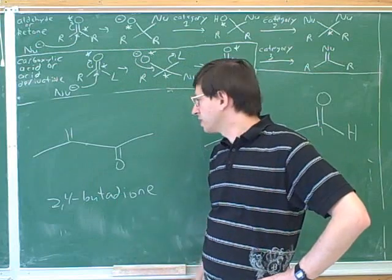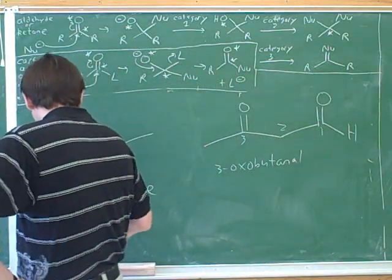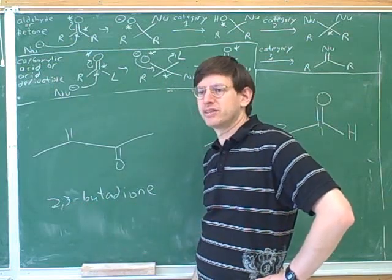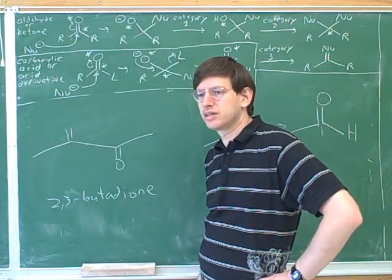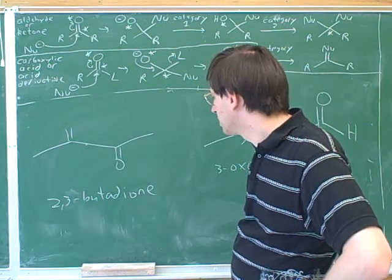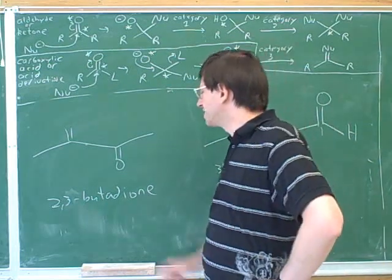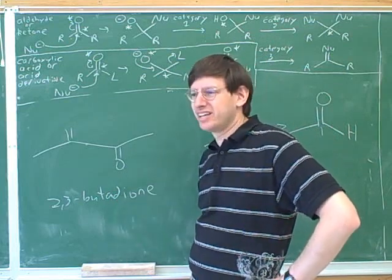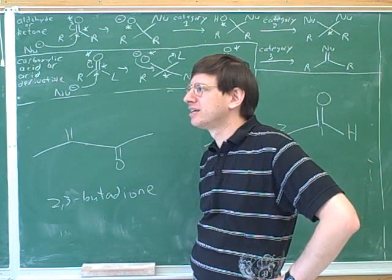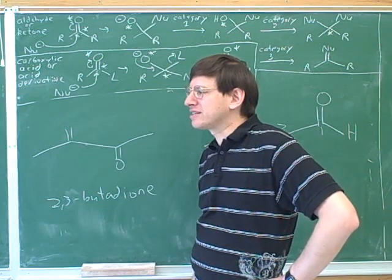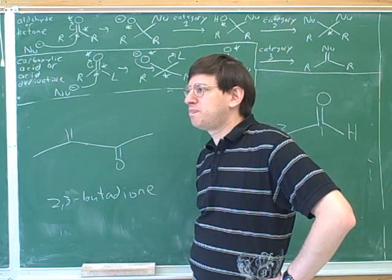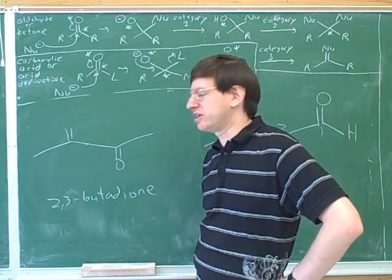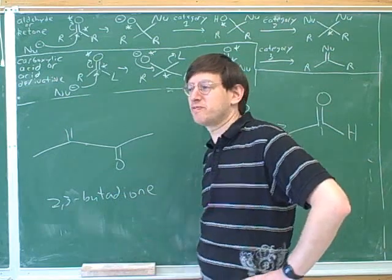So for example, this I think would be called a 2,3-butadione — they don't have examples of this in the book, but logically it looks like that. A butan-dione? This seems a little bit more pronounceable, so I think it would be called butadione. That's what you do for alcohols — you don't call it pentandiole, you call it pentadiole. Sometimes they make little adjustments just for pronounceability.